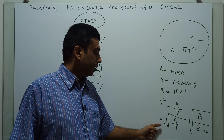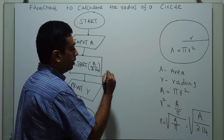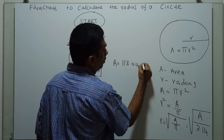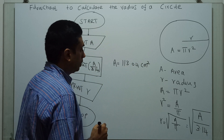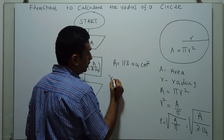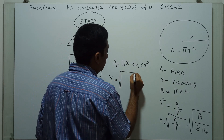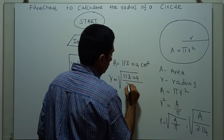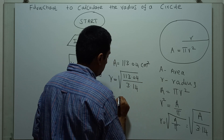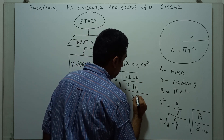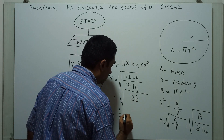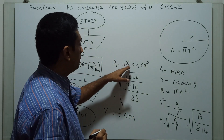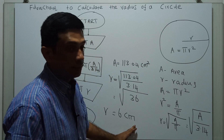We will see an example to calculate the radius from the area. For example, my area equal to 113.04 cm square. Then I am going to calculate the radius: radius equal to square root of 36, so this is equal to 6 cm. For an area of 113.04 cm square, the radius is 6 cm.